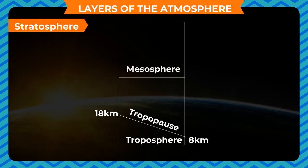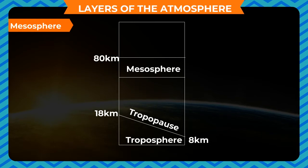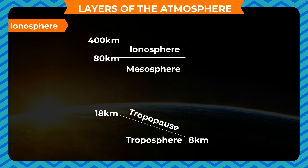The mesosphere extends up to a height of 80 kilometers above the stratosphere. The mesosphere has the coldest temperature in the atmosphere. The ionosphere starts at about 80 kilometers and extends up to nearly 400 kilometers above the earth's surface. Temperature increases with the increase in height in this layer.